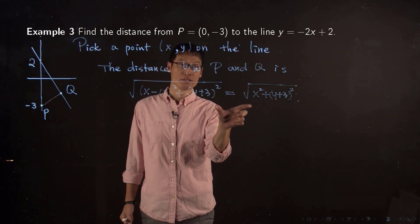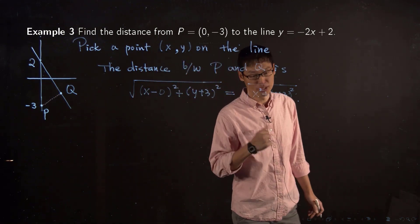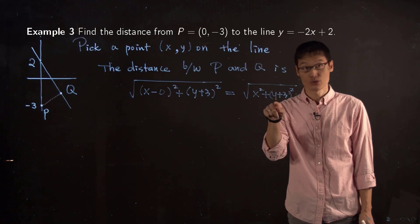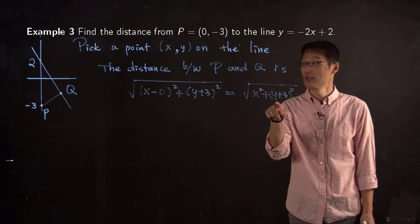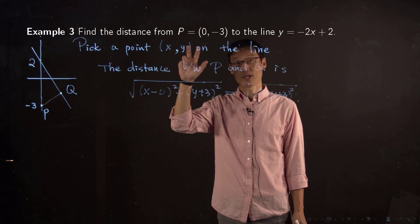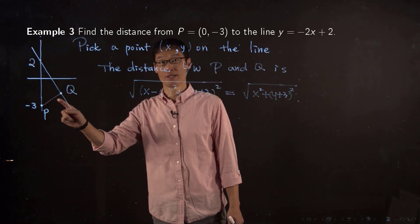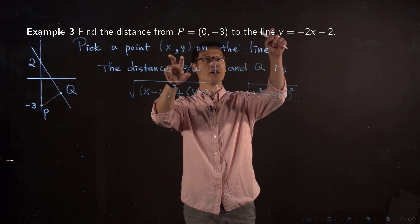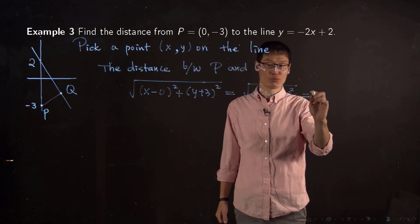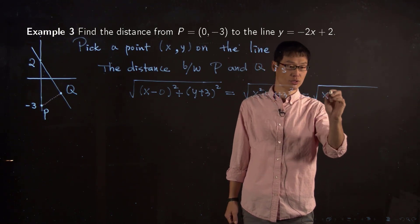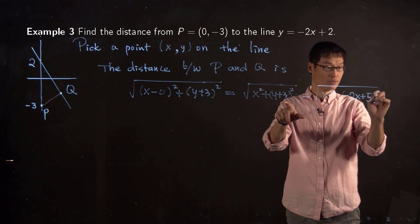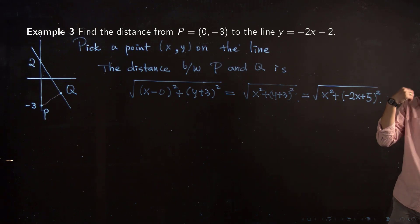We want to minimize this, but we have two variables, so we need to eliminate one. We eliminate y because Q must be on the line, meaning x and y must satisfy the relationship y = -2x + 2. Replacing y, the expression becomes square root of x² + (-2x + 2 + 3)², which is square root of x² + (-2x + 5)². Now we have a function in x.